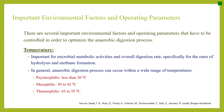Important environmental factors and operating parameters. There are several important environmental factors and operating parameters that must be controlled to optimize the anaerobic digestion process. Starting with temperature — temperature is important for microbial metabolic activities and overall digestion rate, specifically for hydrolysis and methane formation. Anaerobic digestion can occur within a wide range of temperatures, divided into three groups: psychrophilic (less than 20°C), mesophilic (30 to 42°C), and thermophilic (43 to 55°C).